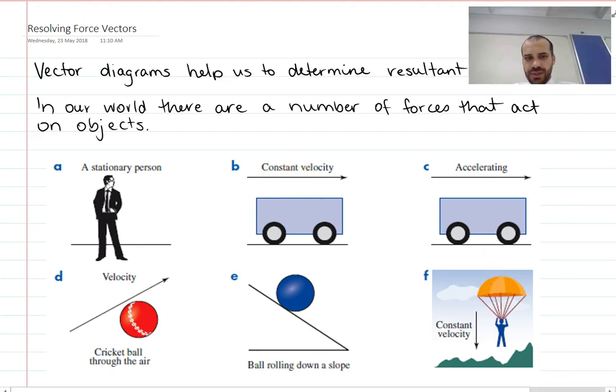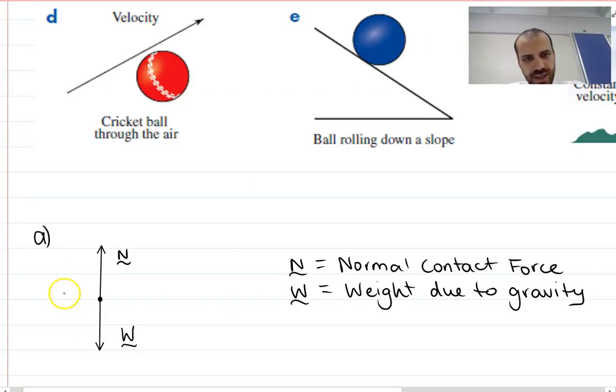Okay, so first of all, the stationary person. So here's our stationary person. I'll just draw him on the screen. Now, there are two forces acting on our person. There is a force or a vector or a force vector acting downwards, and we call that the W vector, and that's the weight due to gravity, the weight pulling the person down to earth.